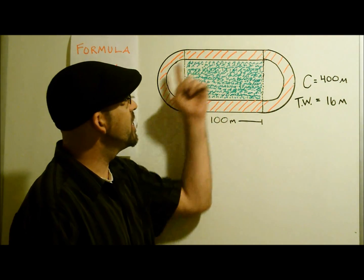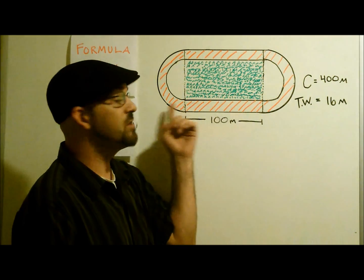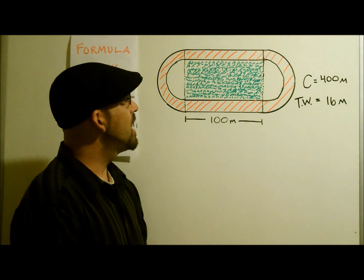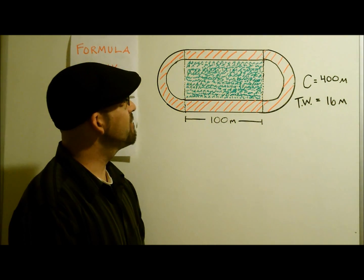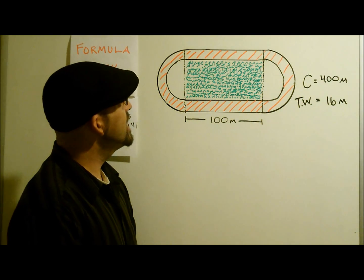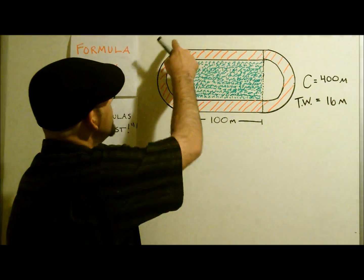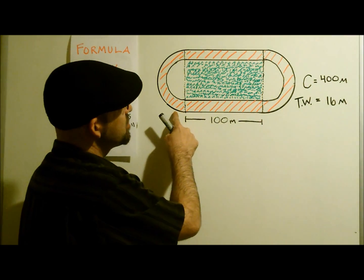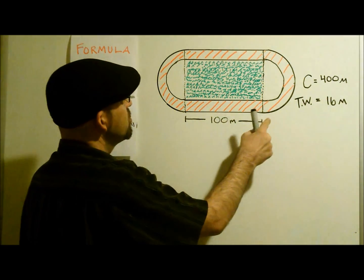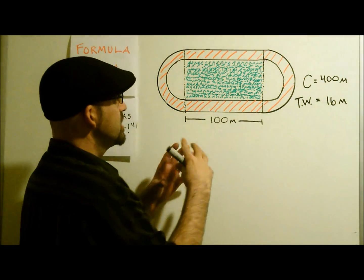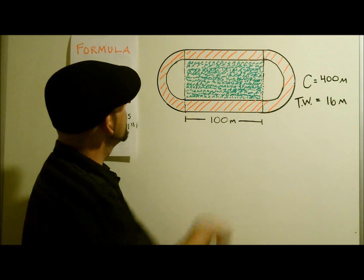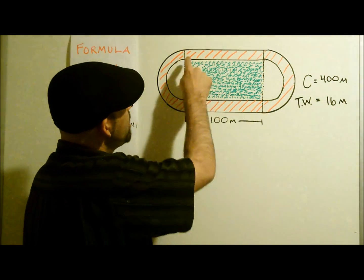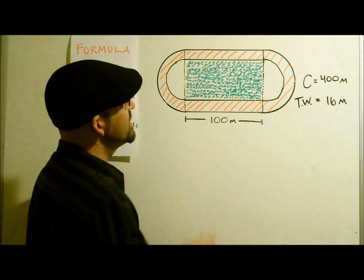I'm trying to find the area of the track. How would I do that? I'll have to think about it for a second. I see a couple shapes in here. I see a circle here, a half circle and another half circle to make one circle. I see a big rectangle in the middle, maybe even a small one right here where the grass is.